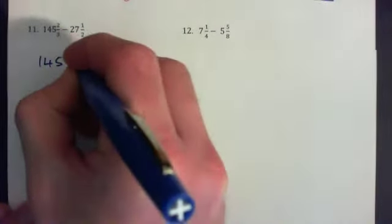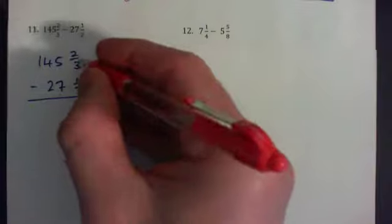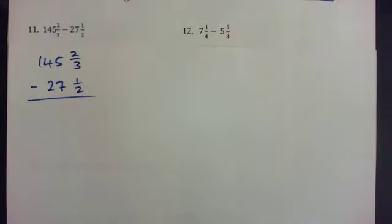145 and 2/3 minus 27 and 1/2. Just by looking at that you might be able to tell that 2/3 is more than 1/2, so we're not going to have to borrow anything in order to subtract.